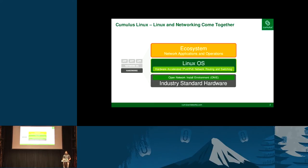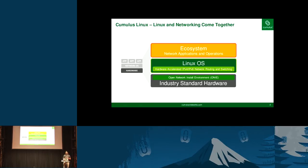So who here knows what Cumulus Linux is? OK, a handful. So for everyone else, Cumulus Linux is a network operating system that runs on what we call open networking switches. The basic idea is that unlike the traditional switching market where you would buy an appliance from a vendor and it would have the OS, the hardware, all bundled together with a fixed set of functionality and software — we treat it more like the servers market, where I can buy hardware from one vendor, I can buy an operating system from another vendor, and then put whatever applications on top I want.